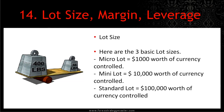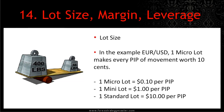And finally, you've got your standard lot, and the standard lot controls $100,000 worth of currency. In the example of the Euro/USD, one micro lot makes every pip of movement worth $0.10. So if the market moves in your favor one pip, you'll be up $0.10; if it moves against you one pip, you'll be down $0.10. A mini lot is worth $1 a pip, and a standard lot is $10 a pip. So if you're trading one standard lot and the price moves against you 10 pips – 10 times 10 – you'll be down $100.